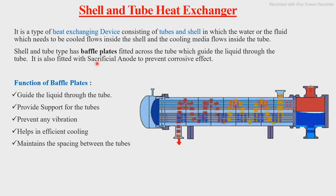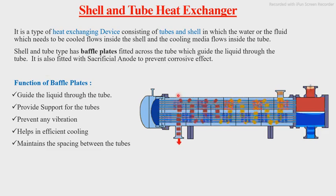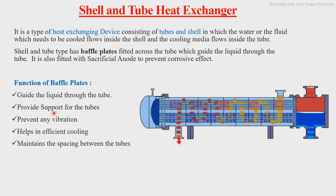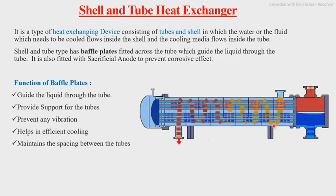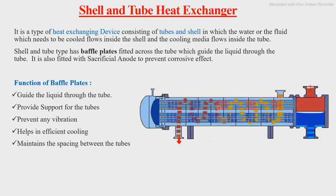The shell and tube type also has a baffle plate fitted across the tubes which guides the liquid through the tube. It is also fitted with a sacrificial anode to prevent corrosive effects. The functions of baffle plates — commonly asked in interviews and exams — are: they guide the liquid through the tube; they provide support for the tubes; they prevent vibration; they help in efficient cooling by increasing the surface area in contact with the tubes; and they maintain the spacing between the tubes.